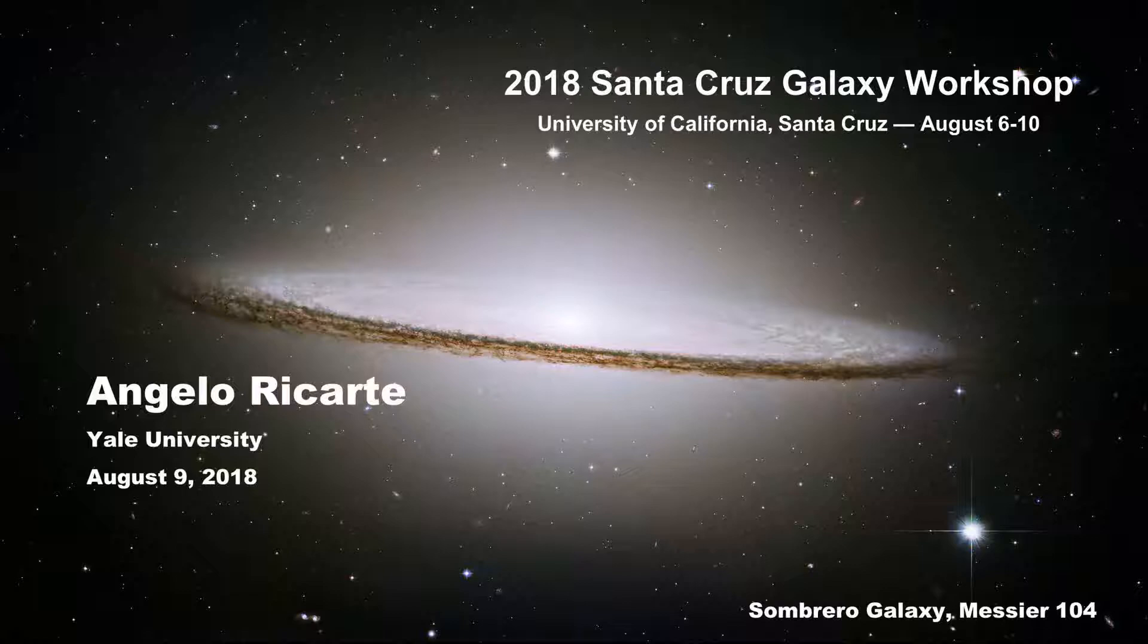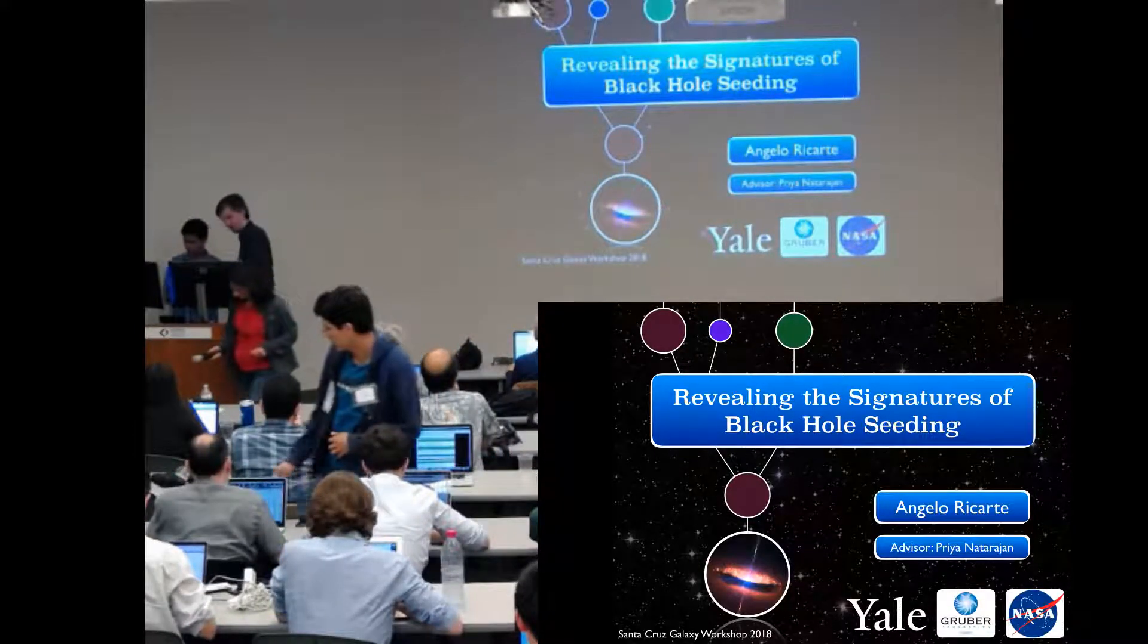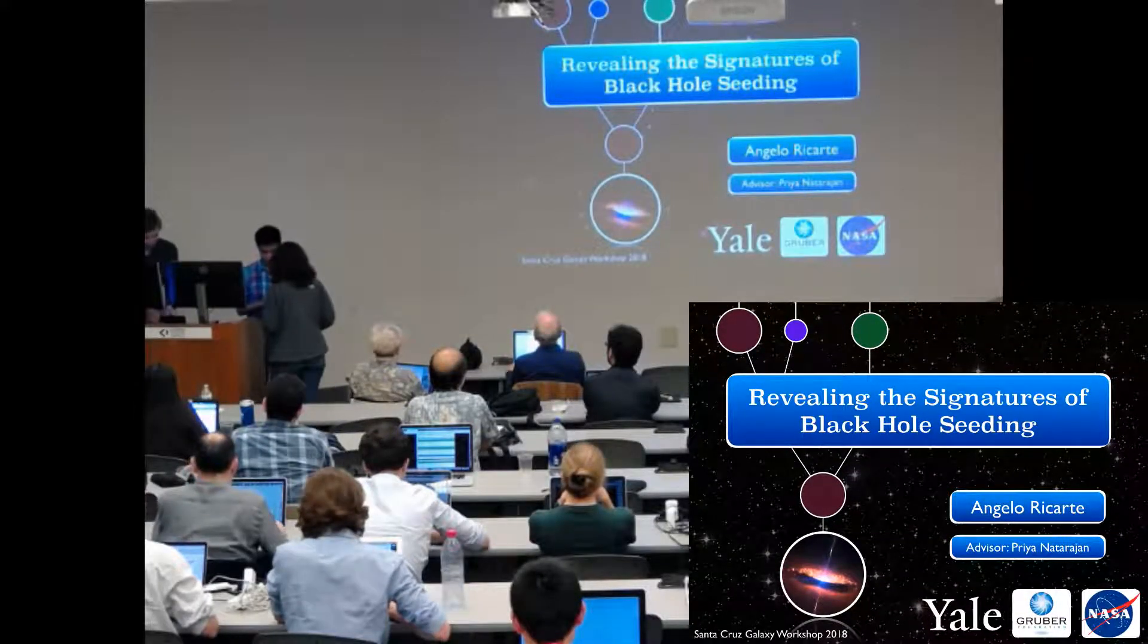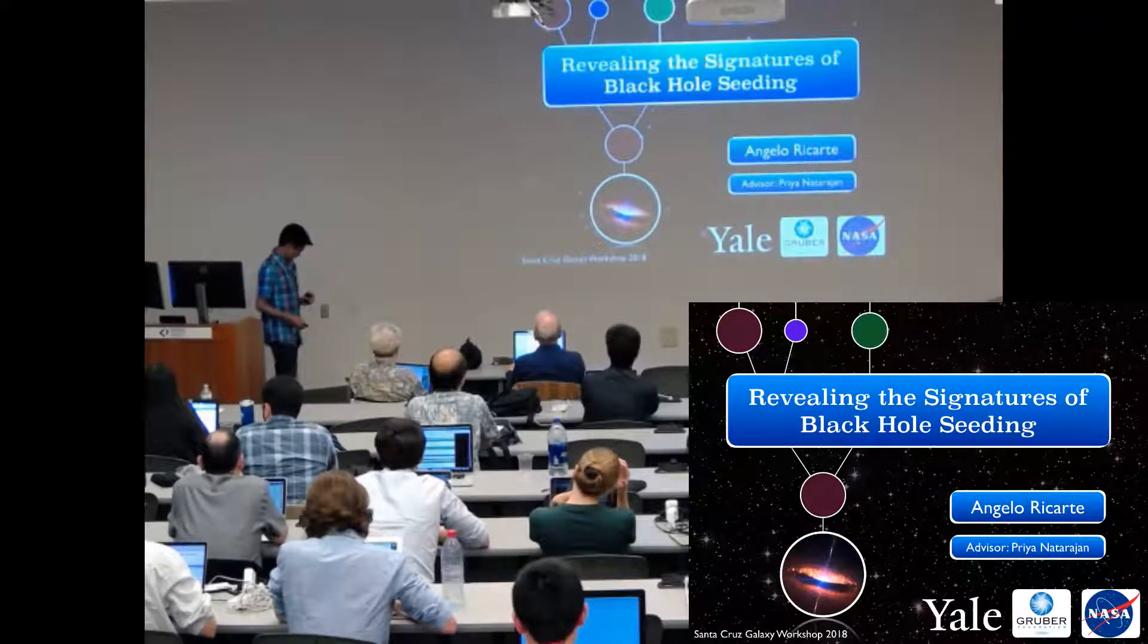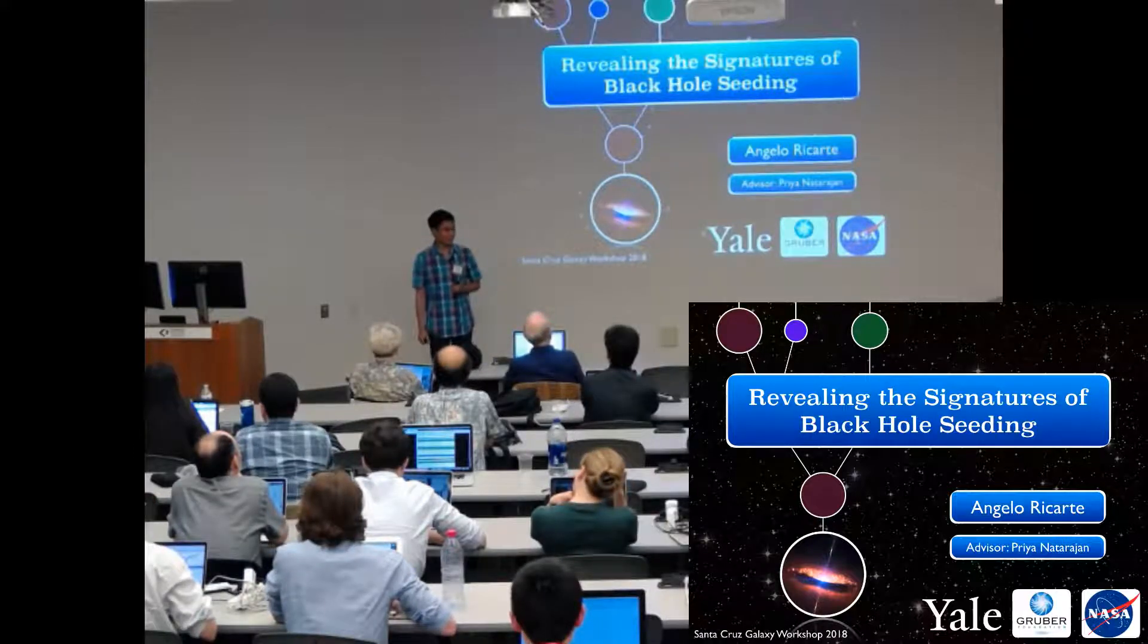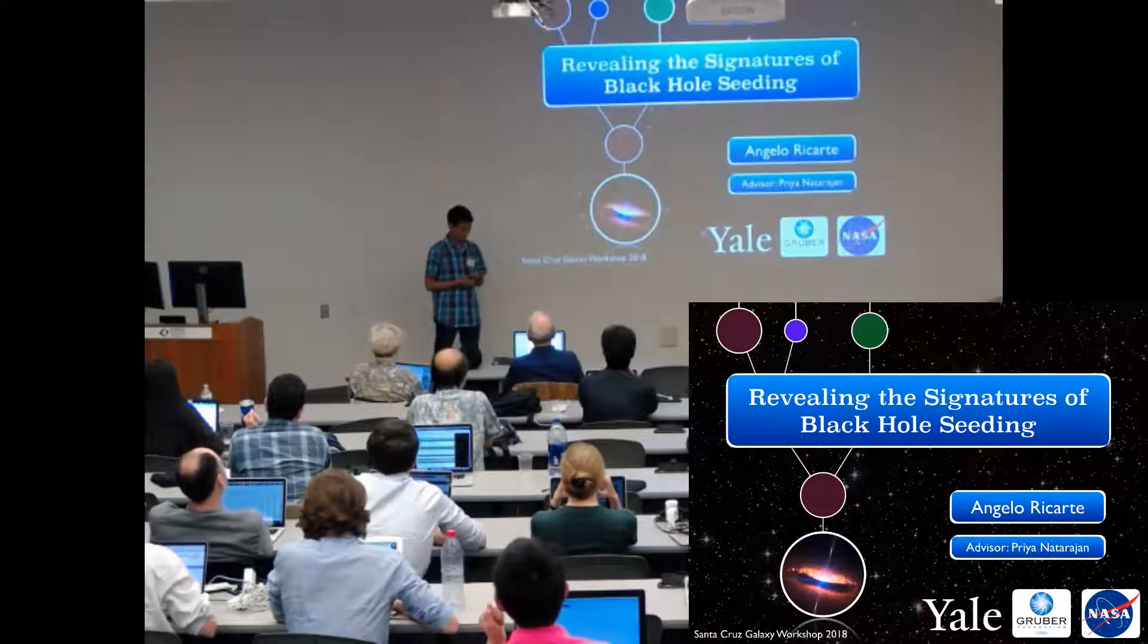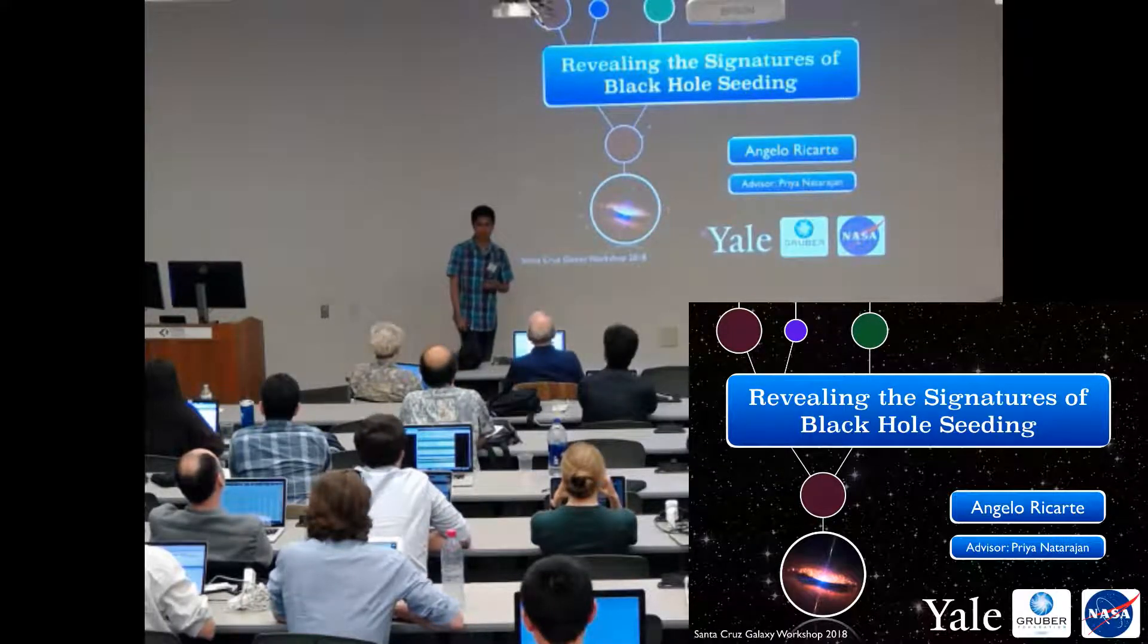The next speaker is Angelo Ricarte, revealing the signatures of black hole seeding. Thanks for letting me give a talk. My name is Angelo Ricarte, I'm a graduate student at Yale University working with Priya Natarajan. Today I'll be telling you about a paper currently in review about revealing the signatures of supermassive black hole seeding using a different technique from Colin DeGraff.